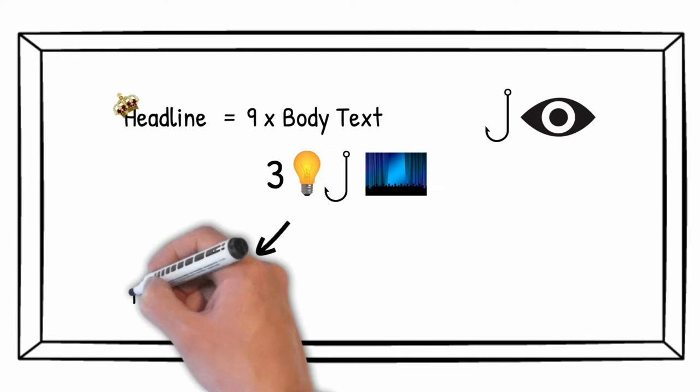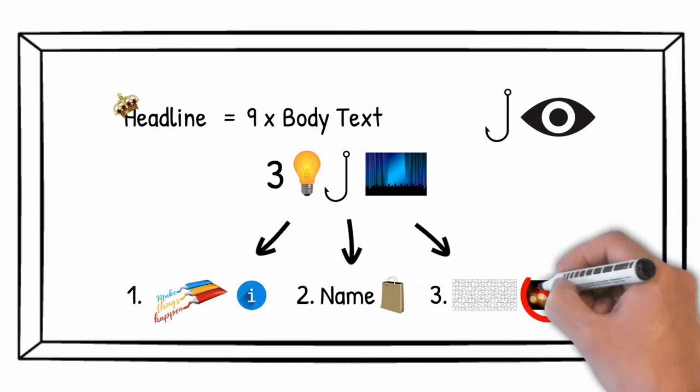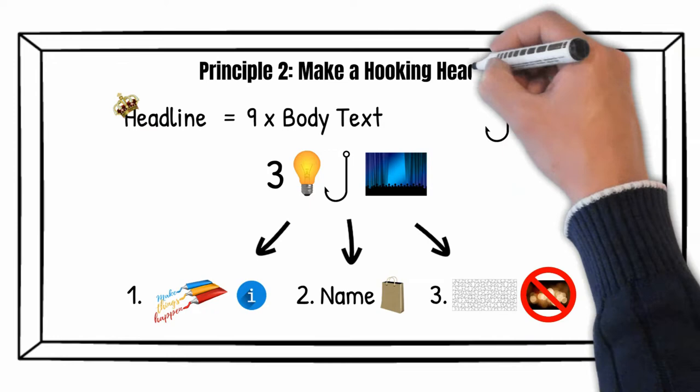1. Describe helpful and useful information with real-life value. 2. Include the name of the product if there is any. 3. Be specific — something like "5 principles of advertising" is better than something vague like "advertising suggestions." Principle 2: Make a hooking headline.